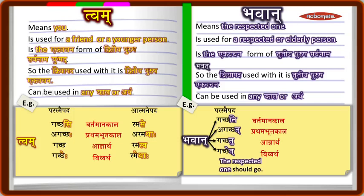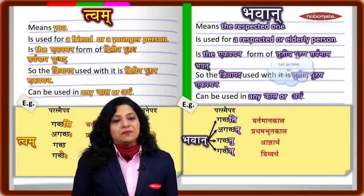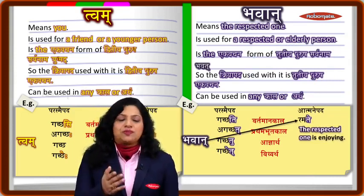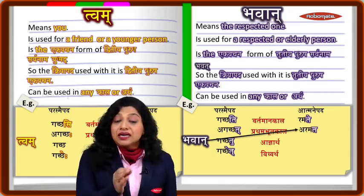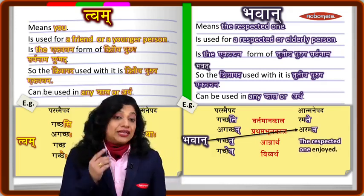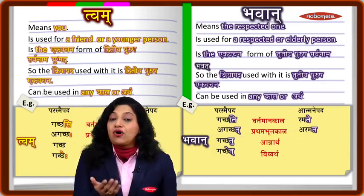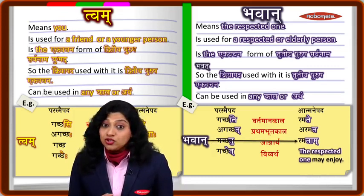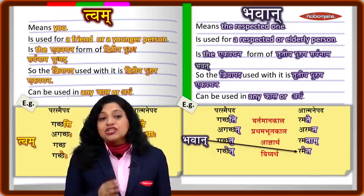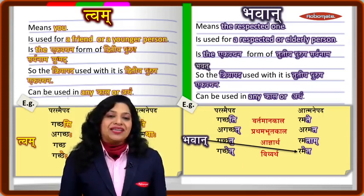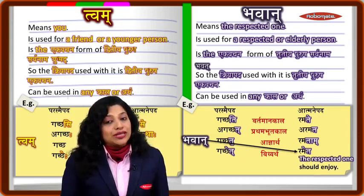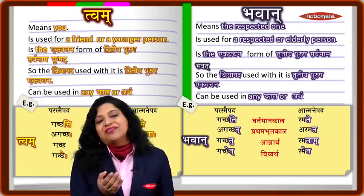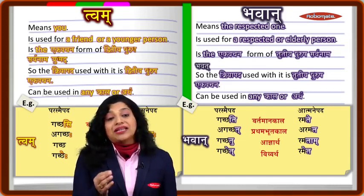For an atmanepada dhatu like 'ram,' in vartamana kala it is 'bhavan ramate' — the respected one is enjoying. In prathama bhutakala it is 'bhavan aramata' — the respected one enjoyed. In adhyartha (order, request, permission) it is 'bhavan ramatam' — the respected one may enjoy. And in vidhyartha it is 'bhavan rameta' — the respected one should enjoy.